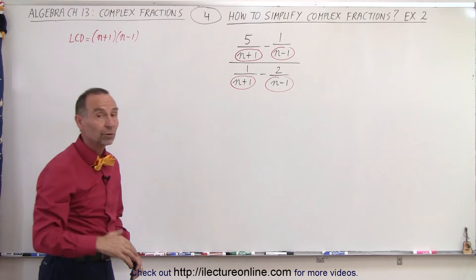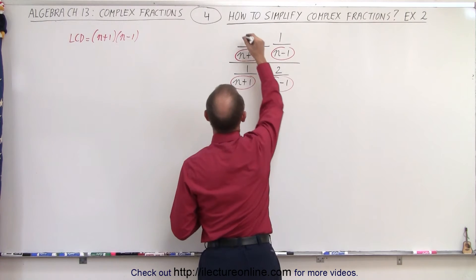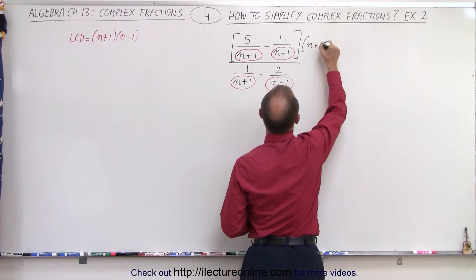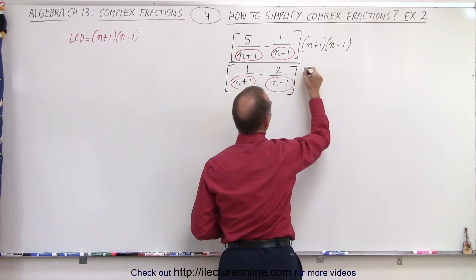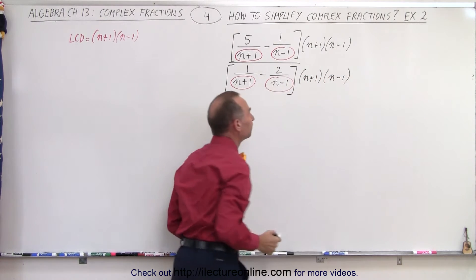So now what we're going to do is we're going to multiply both the numerator and the denominator by the LCD. So multiply this times n plus 1 times n minus 1 and multiply this, the denominator, by n plus 1 times n minus 1.